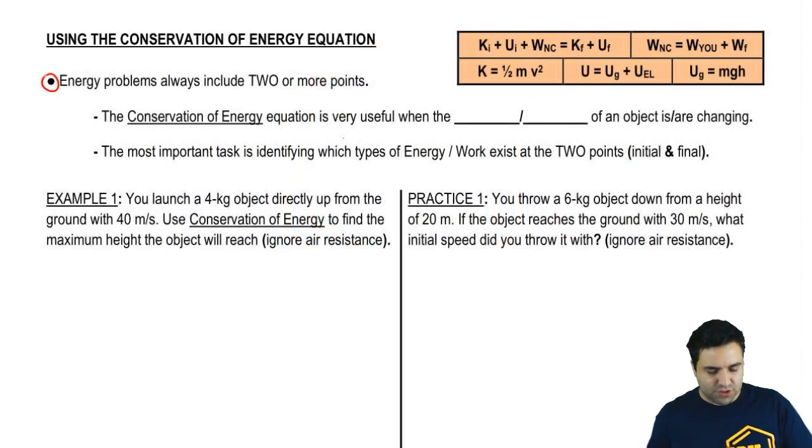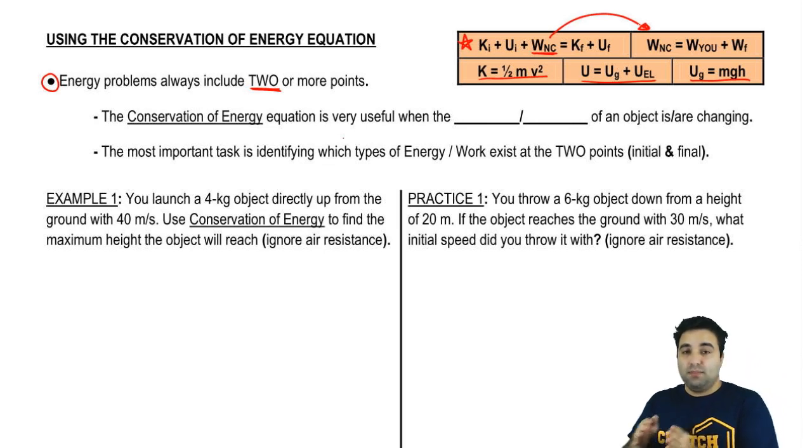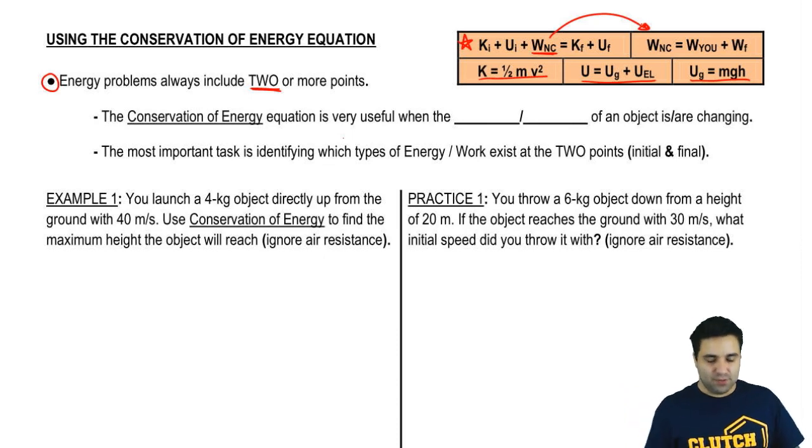One really important point about the energy equation is that energy problems will always include two points or more, and I'll show you that in the example. Here I've summarized a lot of the equations we talked about: kinetic energy, potential energy is a combination of both, gravitational potential energy is mgh. This is the complete conservation of energy equation, which is the most important out of all of these, and then the work by non-conservative forces is a combination of the work done by applied forces or by you and the work done by frictional forces, which we're not going to have to worry about in this page.